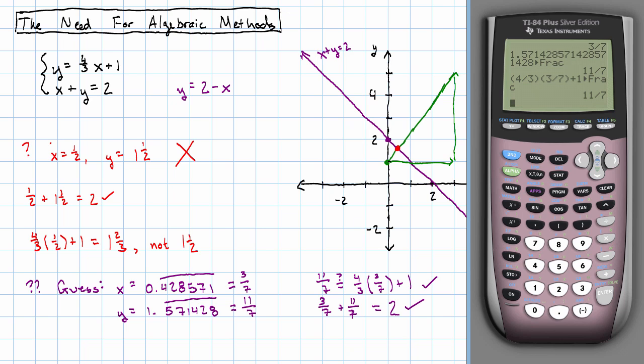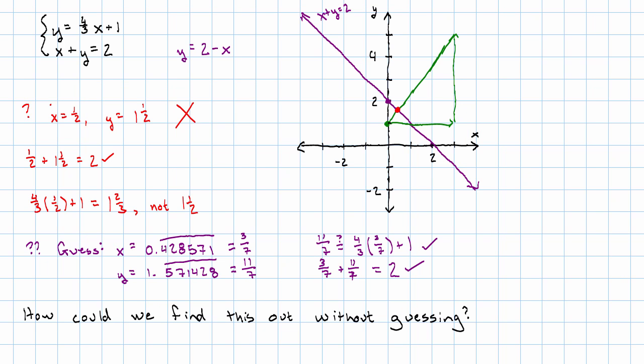So, with the calculator, we could actually work out the exact answer, but we had to guess. If we had a decimal that took any longer than that to repeat, we wouldn't have had enough information to be able to work out the exact answer. How could we find this out without having to do that sort of guessing?